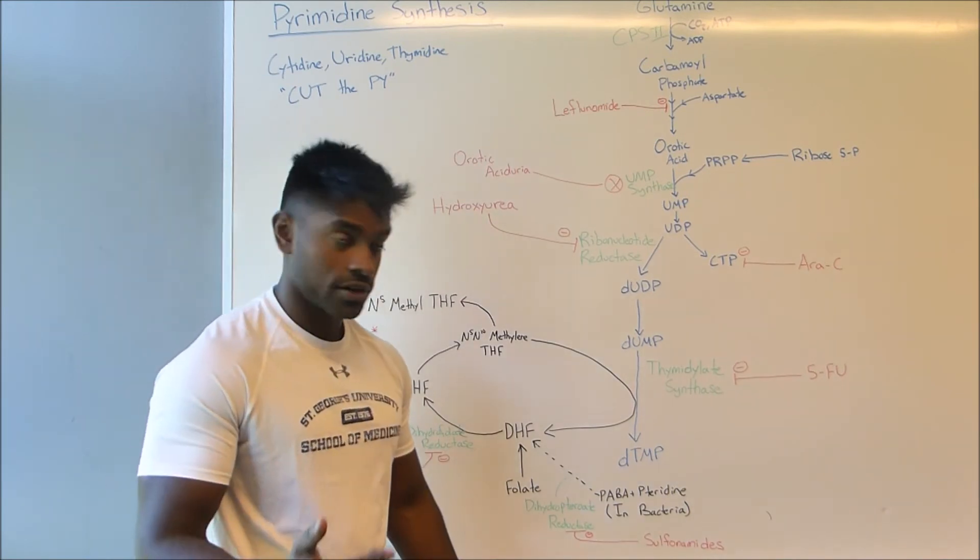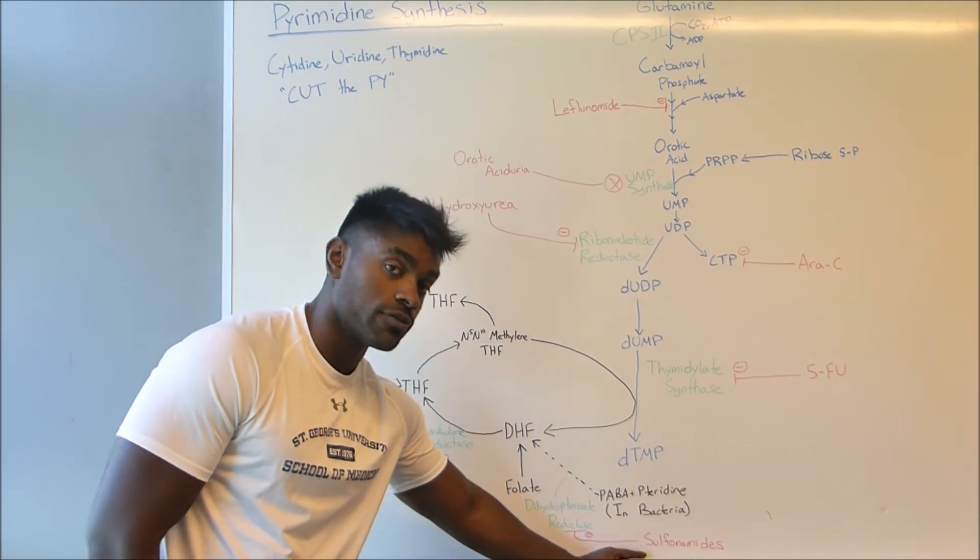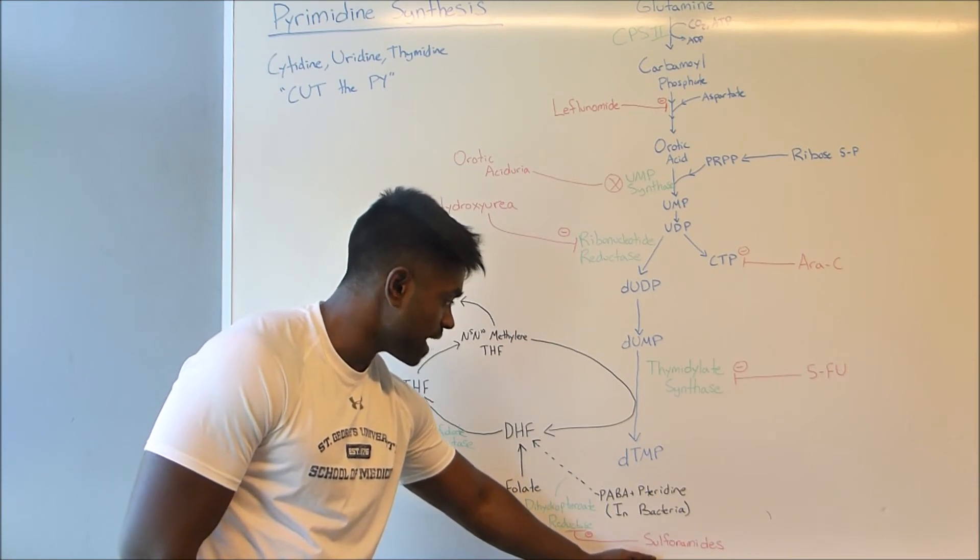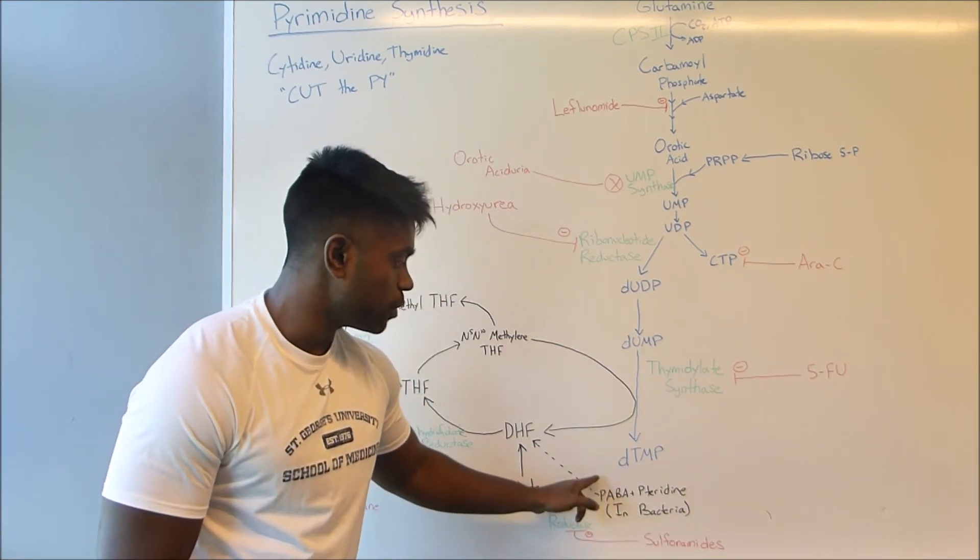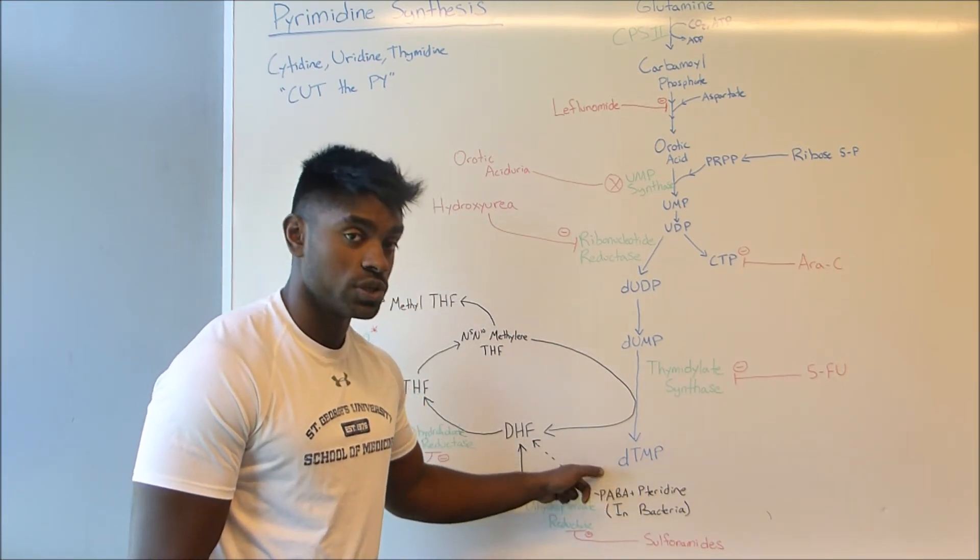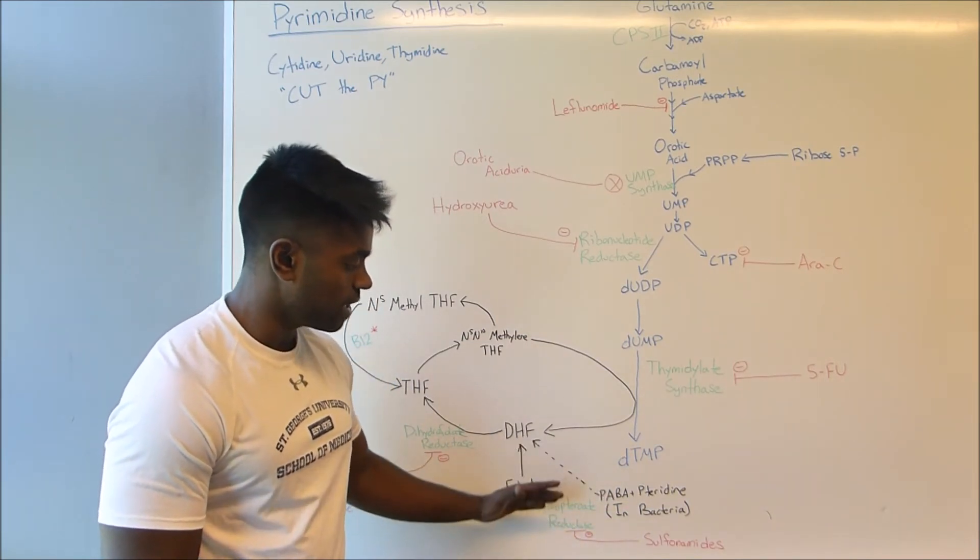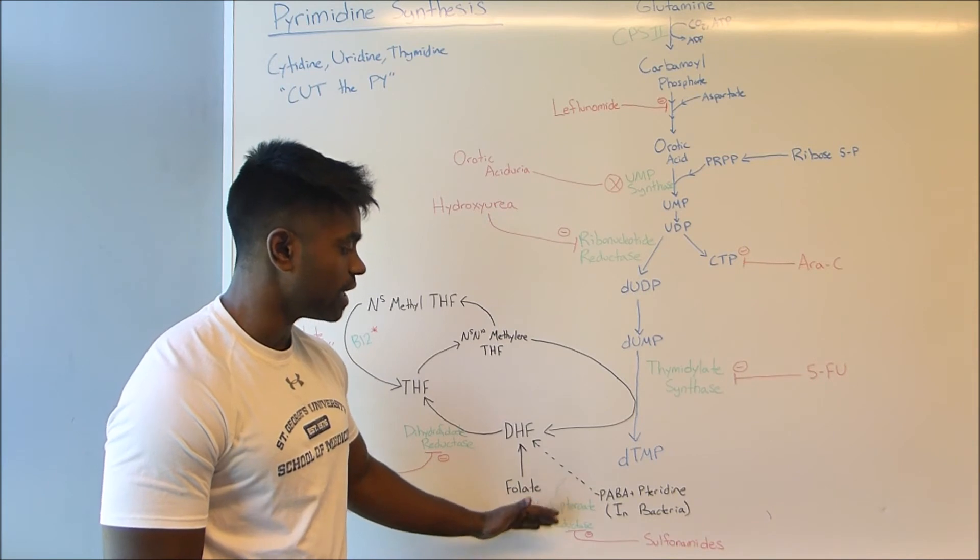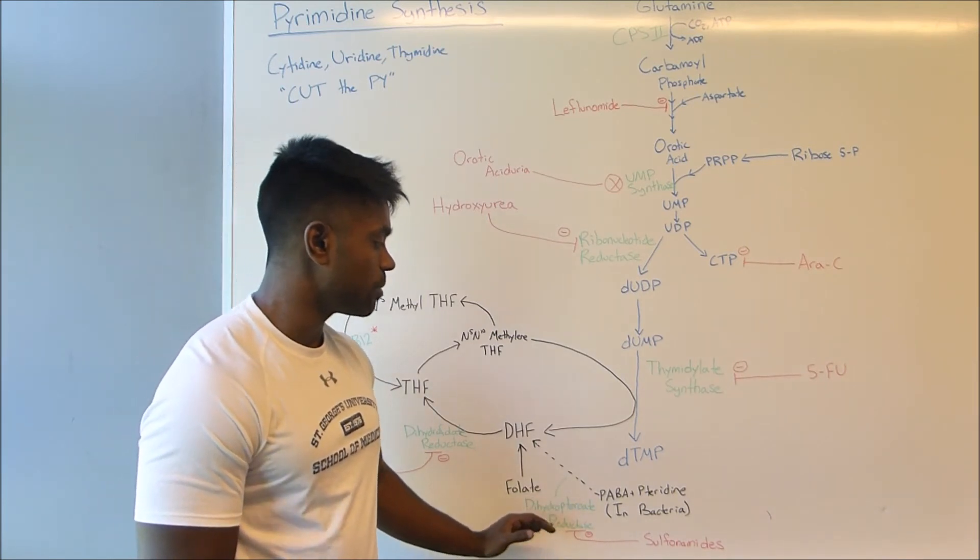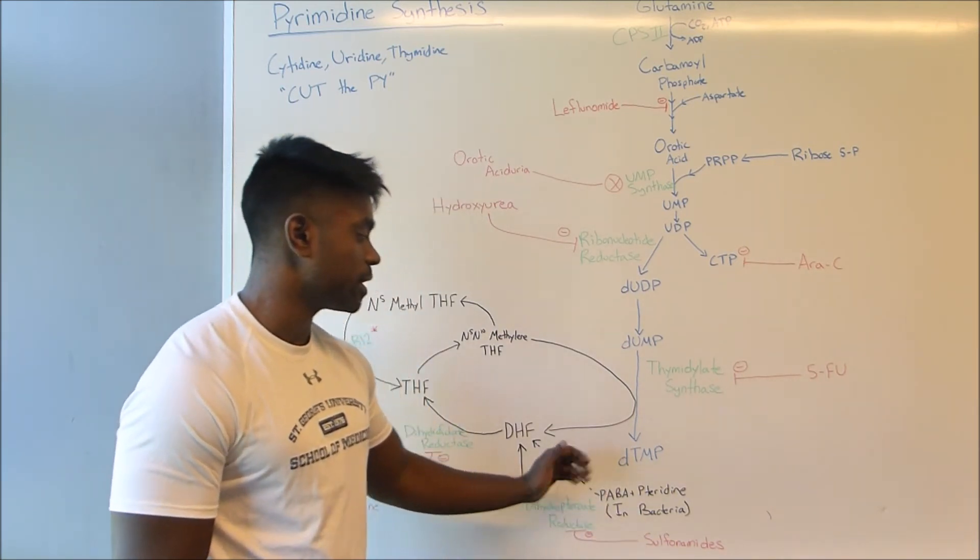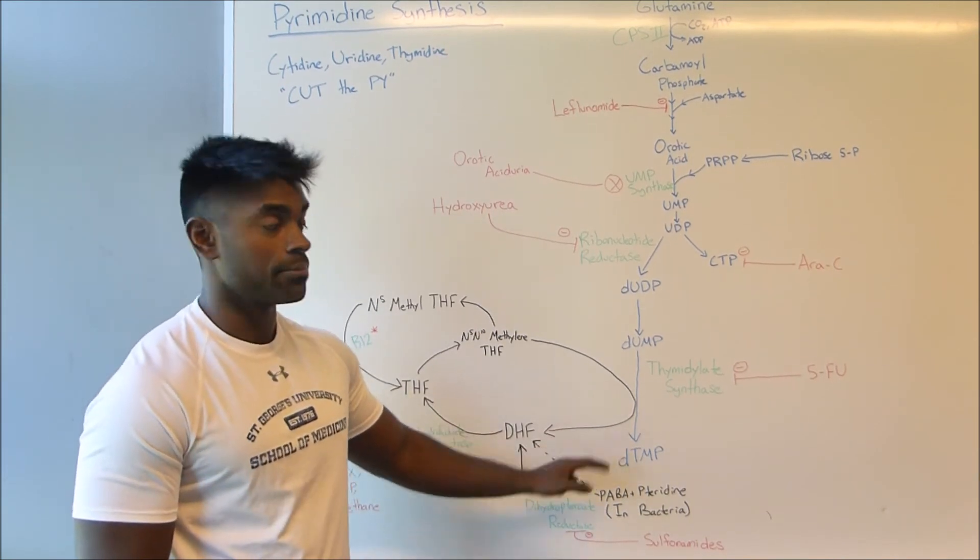Next we're going to have another guy copying which is going to be the sulfonamides. Now the sulfonamides, these guys actually mimic the molecule PABA. So it's used in bacteria of course. And therefore that's going to be causing an inhibition of dihydropteroate reductase because it's only going to be recognizing the sulfonamides but not the real PABA. Therefore causing a decrease in dTMP.